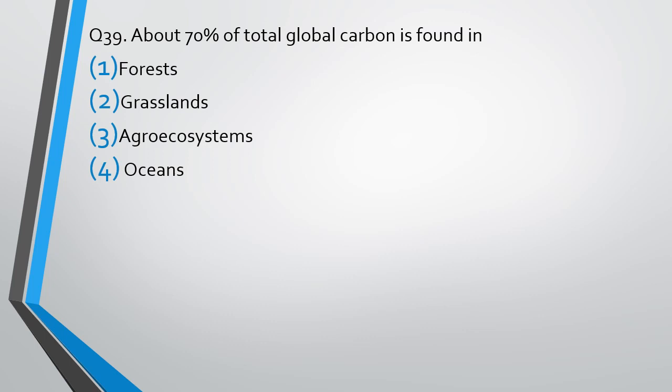Question 39. About 70% of total global carbon is found in: forests, grasslands, agroecosystems, or oceans? The correct answer is option 4 — oceans.